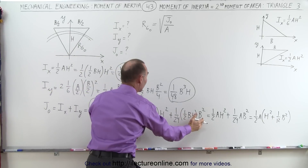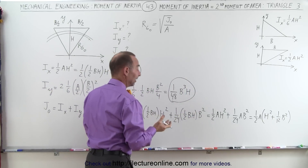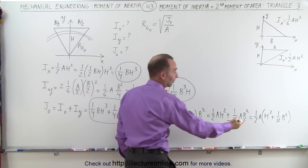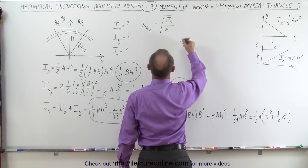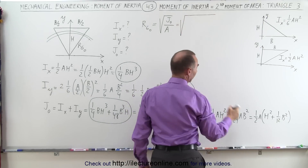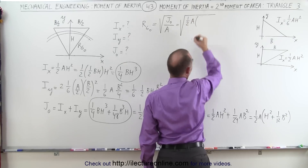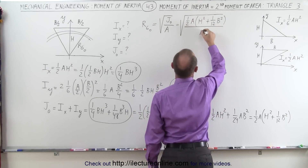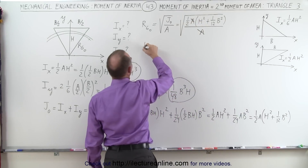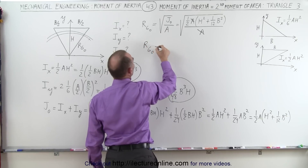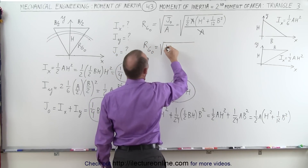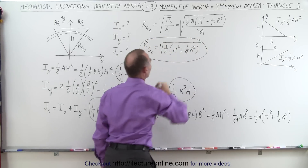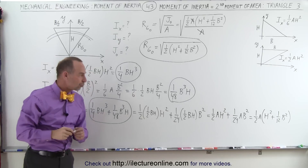I'm going to take this form of the equation for the moment of inertia because I'm dividing it by the area, and the area equals 1/2 bh, so the area cancels out. That means the radius of gyration relative to the origin equals the square root of (h² + 1/12 b²) divided by 2, and that's how we find the radius of gyration for this particular triangle.